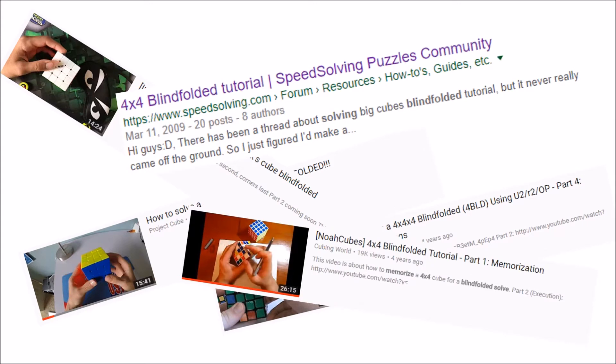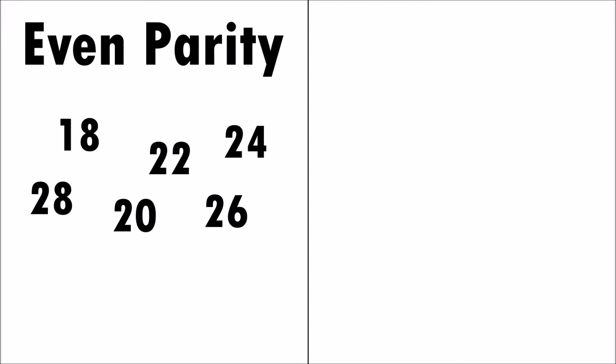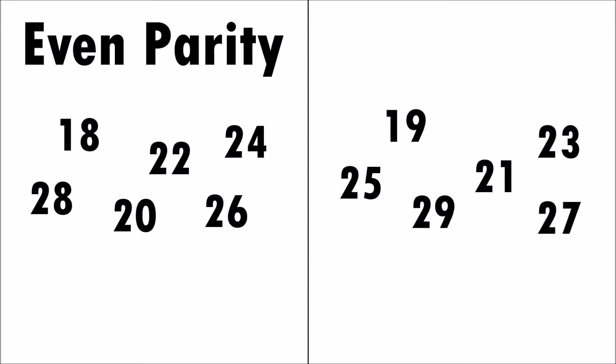During inspection, you'll need to count the number of wings traced, just like CSP. At the end, if you get an even number, you have even parity, and if you get an odd number, you have odd parity.